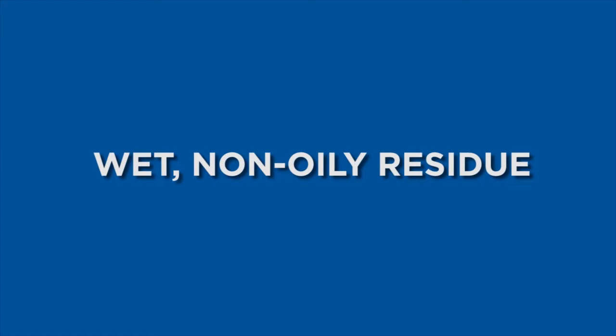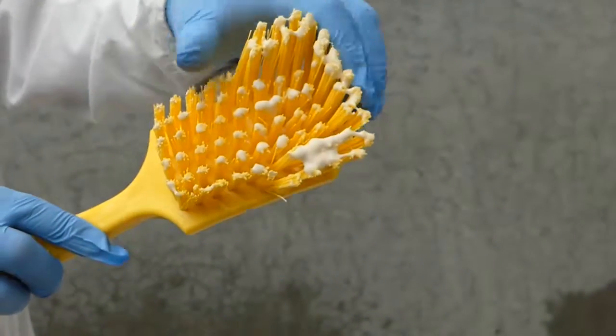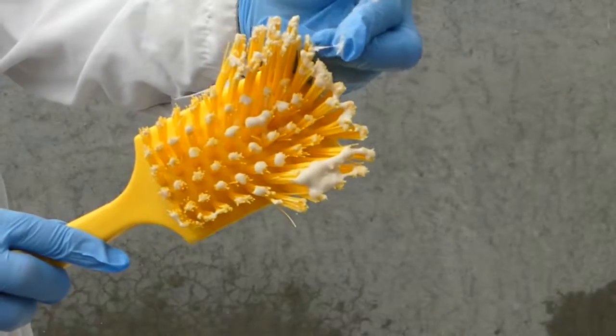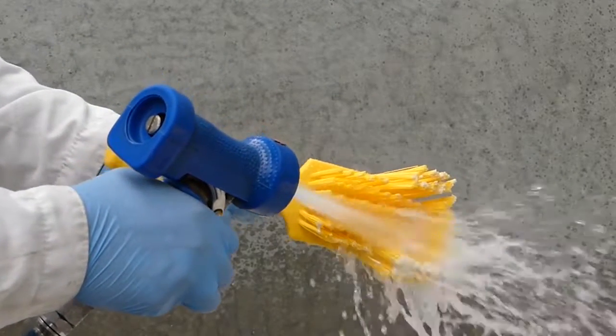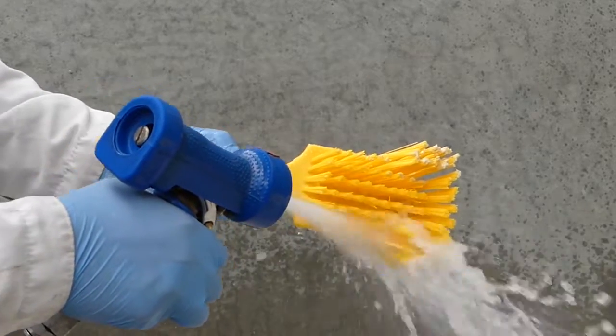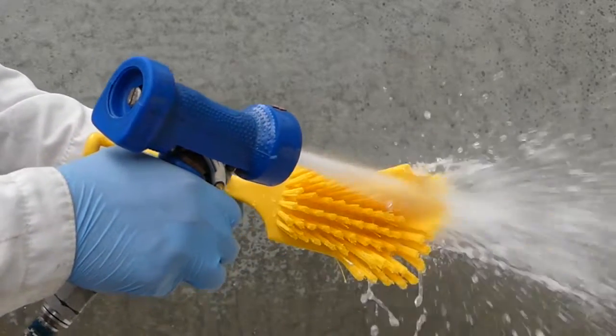Examples of wet, non-oily residue are meat and vegetable scraps and dough. The best way of removing these residues is by cleaning them off with a strong jet of cold water. Always work from the brush stock and jet towards the end of the bristle. This way it will not drive the residue further into the bristle clump.